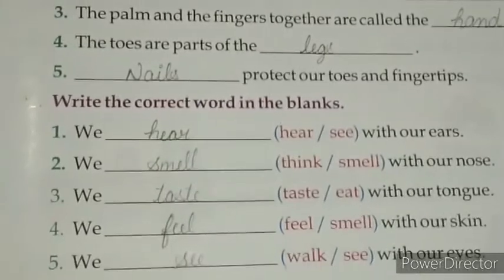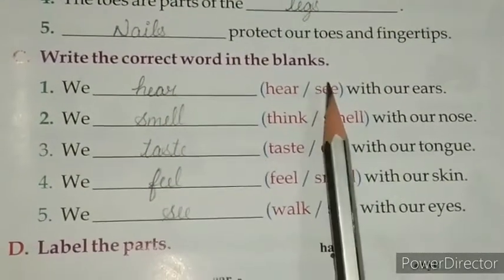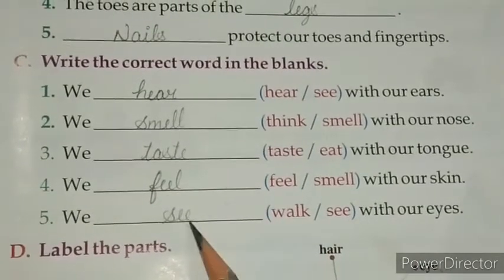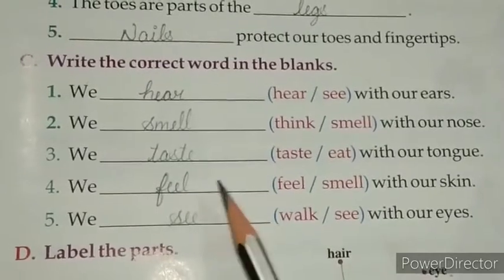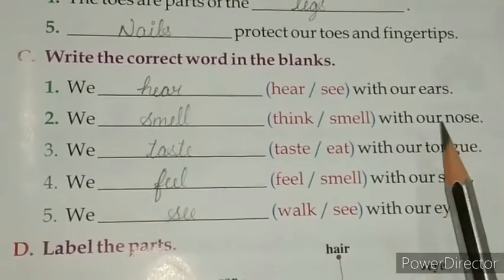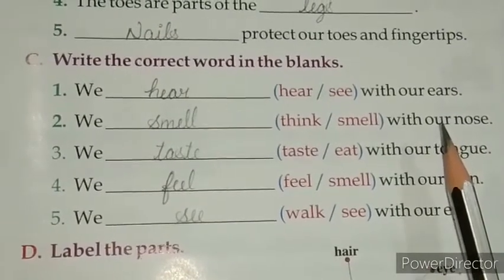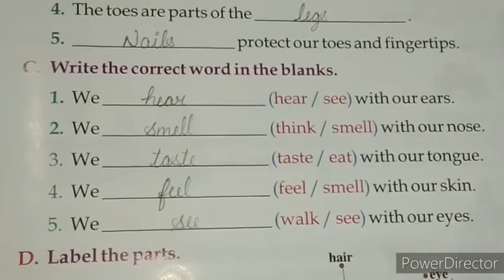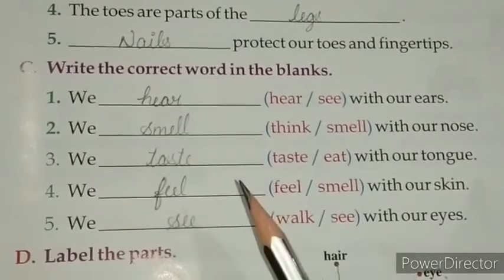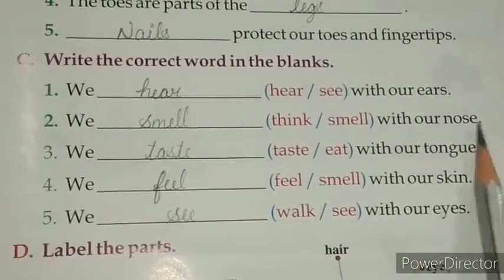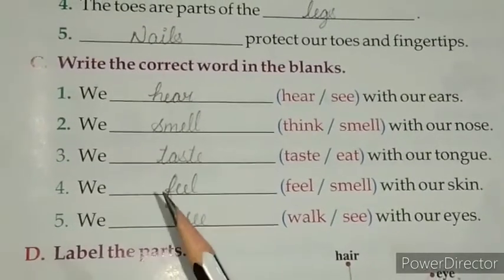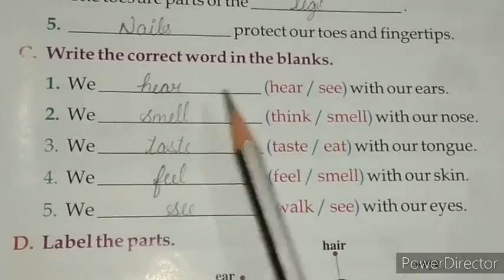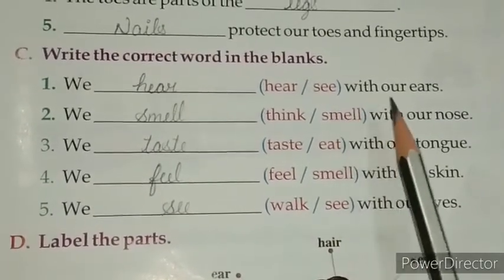Now come on to your next question. Question C: Write the correct word in the blanks. Here we have some blanks and some options. We have to fill in the correct word according to the sentence and write on the given line. Let's start. First one: we blank with our ears — the options are hear and see. What is the work of ears?